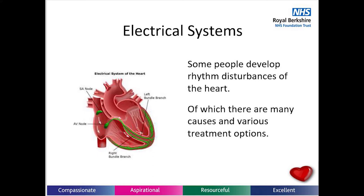Some examples of rhythm disturbances are complete heart block, where the heart goes too slowly, which may require a pacemaker. Some fast heart rhythms may require medication or surgical intervention to slow the heart down. Some rhythms, for example atrial fibrillation, may require medication to help thin the blood, such as warfarin or one of the newer medications like apixaban, which do not require regular blood tests. To diagnose rhythm disturbances, an ECG will be performed, but you may need further investigations as some can be intermittent.